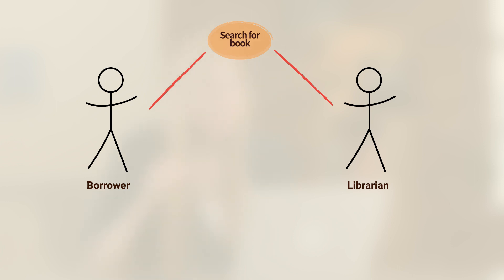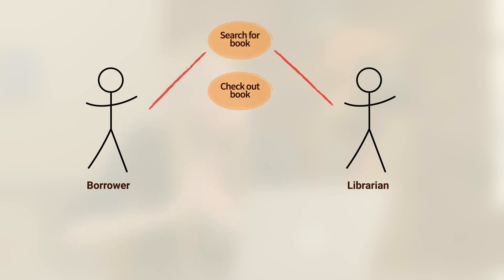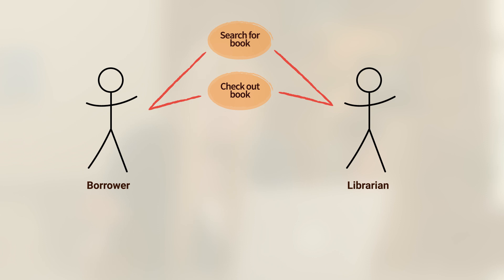The next action we described in our textual use case is similar. The borrower checks out a book. I'll go ahead and write 'check out book' in a circle in the system. However, the librarian must be the one to orchestrate this. So we can connect 'check out book' in the center of the diagram to the actors on both sides.